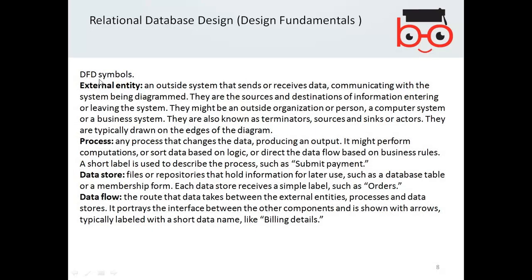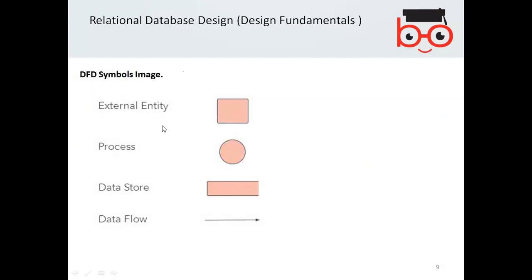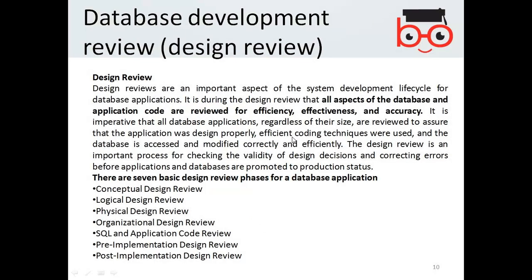Without a data flow diagram and entity relationship diagrams, you cannot design a database. The data flow diagram symbols are: external entity (represented by a square), process (represented by a circle/zero), data store (represented by an open rectangle), and data flow (represented by an arrow). Database development and design review are important aspects of the system development lifecycle.